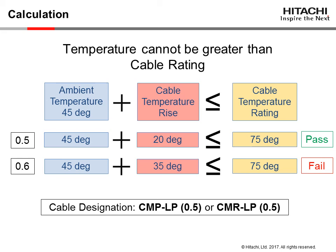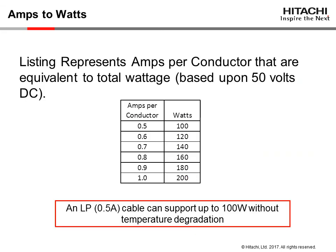As you can see from the chart, 0.5 amps per conductor at 50 volts is equal to 100 watts. Every 0.1 amp is equal to 20 watts. So the cable from the preceding slide with an LP 0.5 rating can support 100 watts of power without any degradation of the cable.